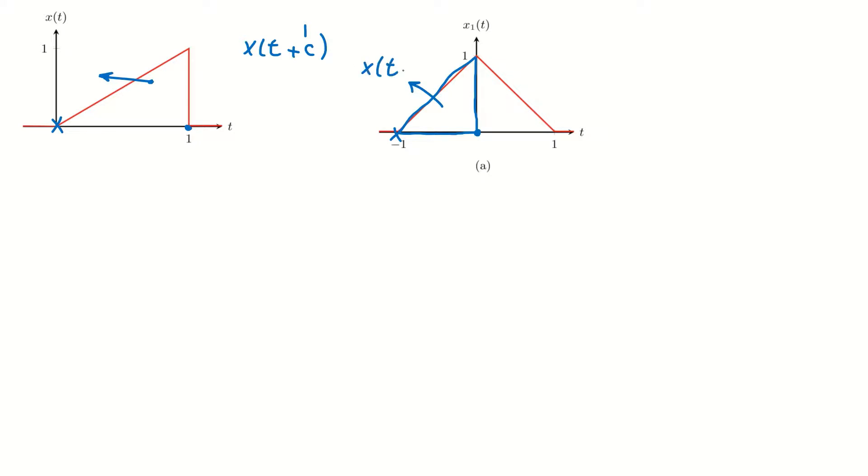is x(t + 1). That means we shift x(t) to the left by one unit of time. And okay, we have the right side—the right side of this x1(t). Let me use a different color. This part, I mean, okay.